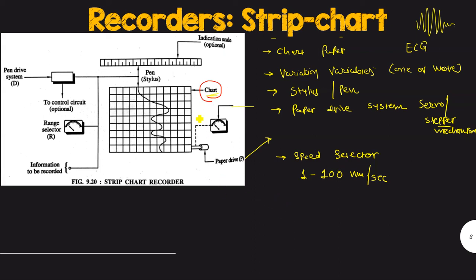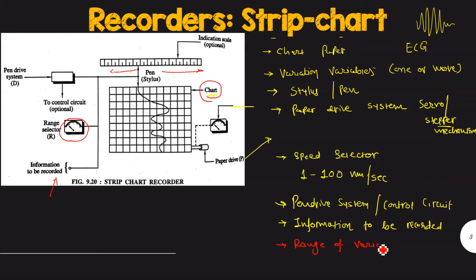There exists another drive system which is nothing but a pen drive system and a control circuitry for pen drive system which is then connected to the variable or the information. As the input quantity to this pen drive system which is to be recorded, accordingly the pen or stylus will attain the horizontal moment and will continuously plot the data on the chart. The range selectors which is shown over here are used to select the range of variable or process parameter.